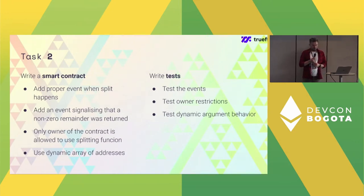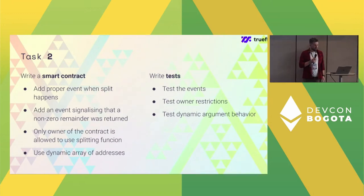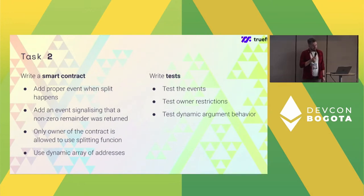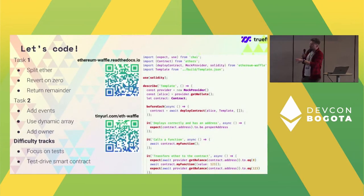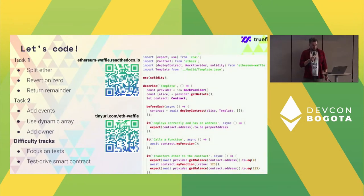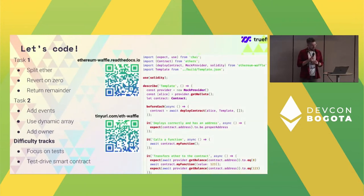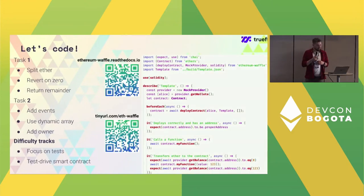Task two has several sub-tasks you can do in any order: add the proper event when the split happens, signalizing the split was called with a particular result; signalize whenever the non-zero remainder was returned; restrict the owner to be the only one allowed to use the contract so only the owner can split Ether; and support a dynamic array of addresses as function arguments, allowing more than two recipients. There's a cheat sheet with a QR code for Waffle documentation, the repository link, the task list, and a basic template showing the general structure of the tests.